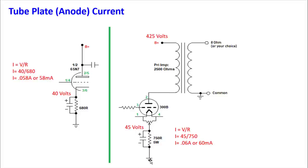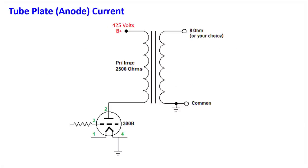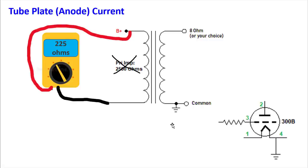What do you do if the circuit is not cathode biased but instead is fixed bias — with no cathode resistor between cathode and ground? Here's the approach: pull the tube to be safe. Get out your digital multimeter, flip it to measure resistance, and measure the DC resistance of the primary winding of the output transformer. This is not the impedance — it's the DC resistance, sometimes labeled DCR on a transformer spec sheet. In this case we measured 225 ohms.